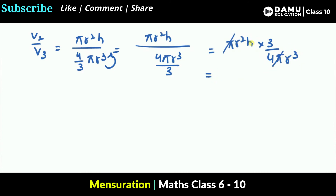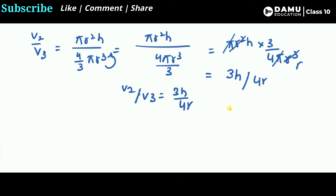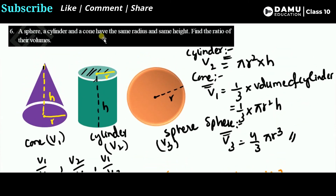After cancellation, pi cancels, and r squared divided by r cubed leaves one over r. So V2 by V3 equals 3h to 4r. Since h and radius are the same for all shapes but h and r are not necessarily equal to each other, V2 to V3 equals 3h to 4r.